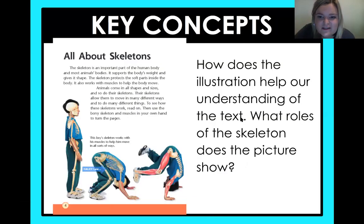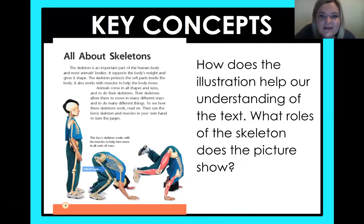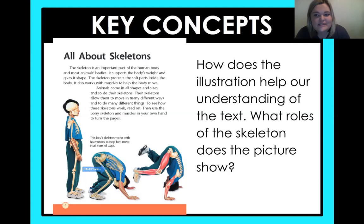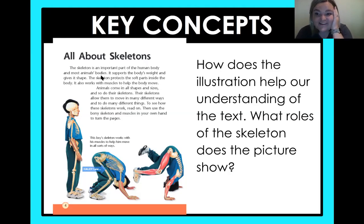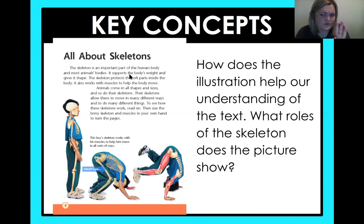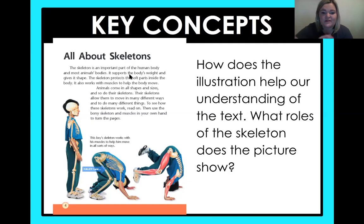That's all we get to read today — what a bummer, but that is okay. So let's look back. We already talked about these pictures, but how did that illustration help our understanding of the text? They don't just throw pictures in there for no reason — they're supposed to help us. What role of the skeleton does this picture show? We talked about those three roles in the first paragraph. Does it support the body's weight and give it shape? Is it protecting the soft parts inside your body? Or is it showing how the body moves? It's showing how you move — and I think it really helped me see how the muscles are working with your bones to help your body move.